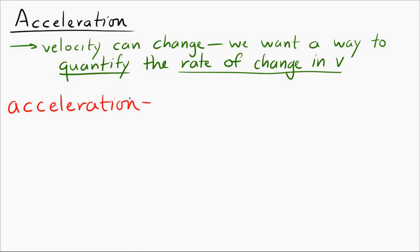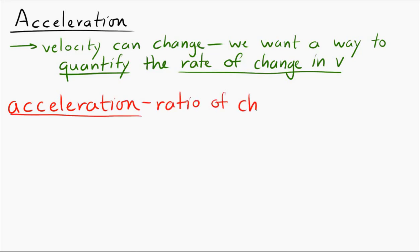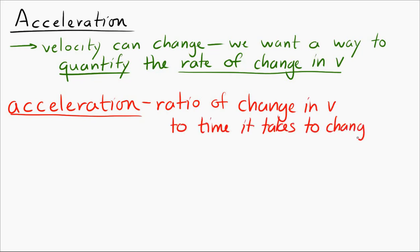The definition of acceleration is the ratio of the change in velocity to the time it takes to change that velocity. That's similar to our definition of velocity, where velocity was the ratio of the change in position to the time it takes — we've just replaced the word position with velocity.